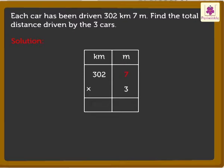So, 7 into 3 is equal to 21. That is 21 meters.